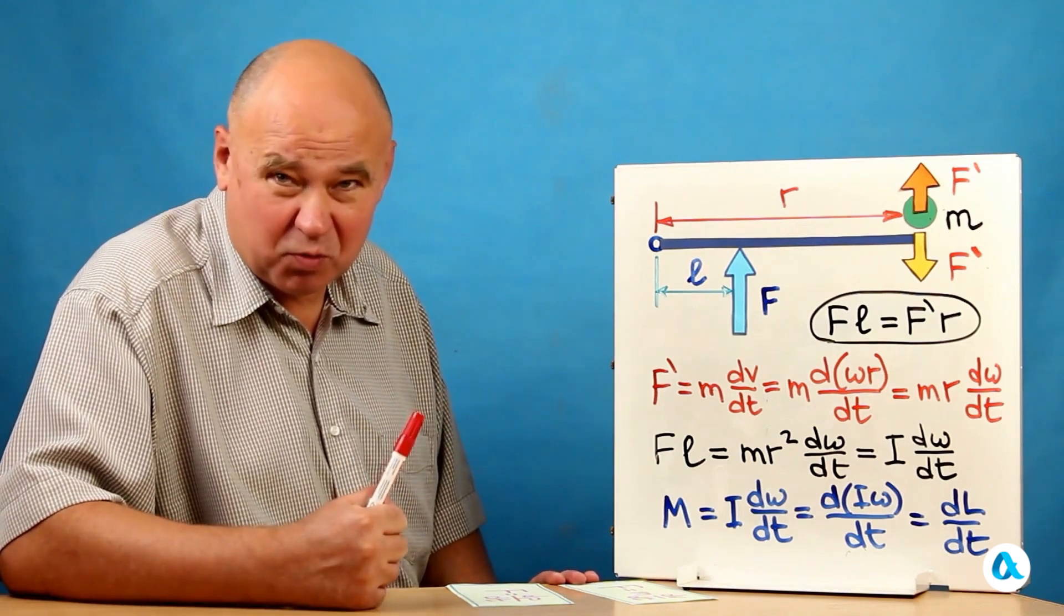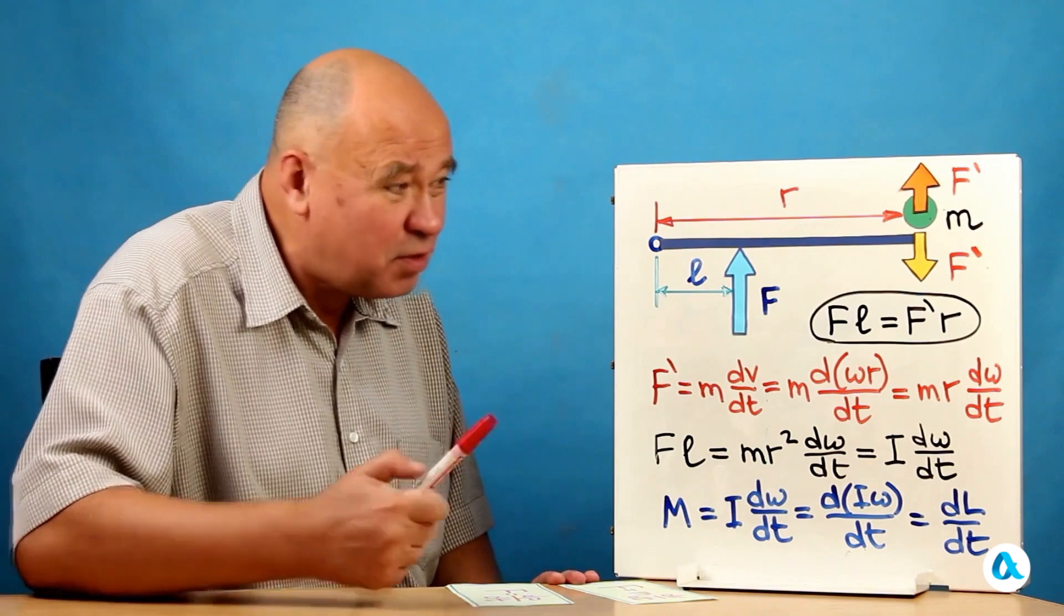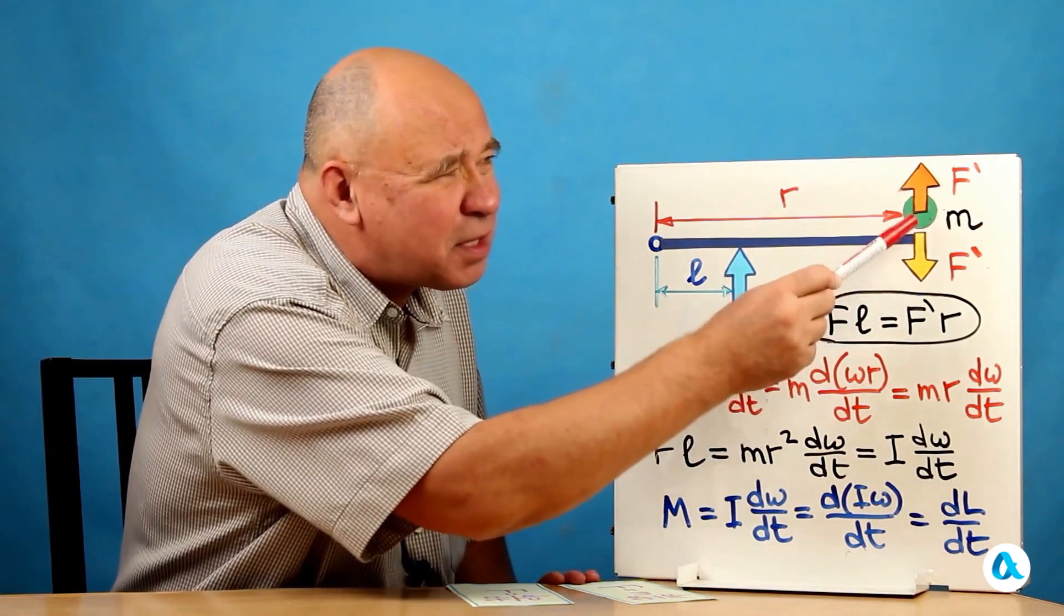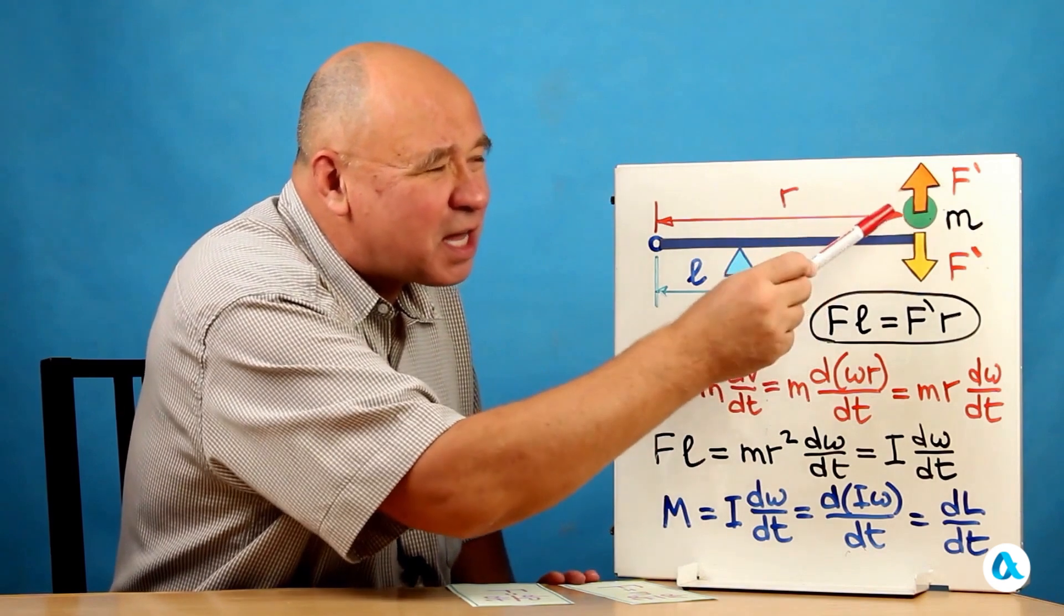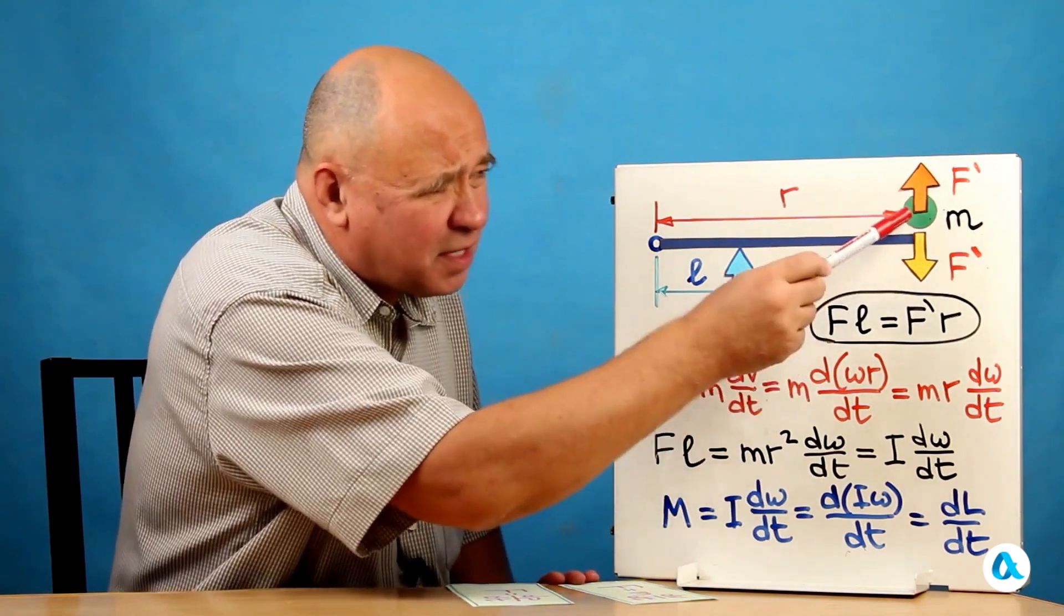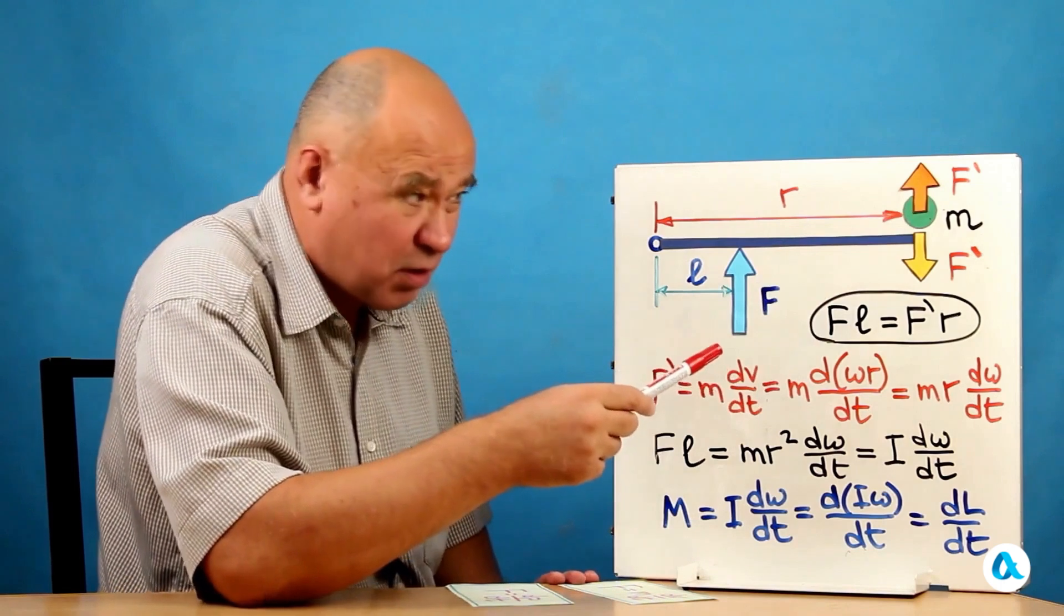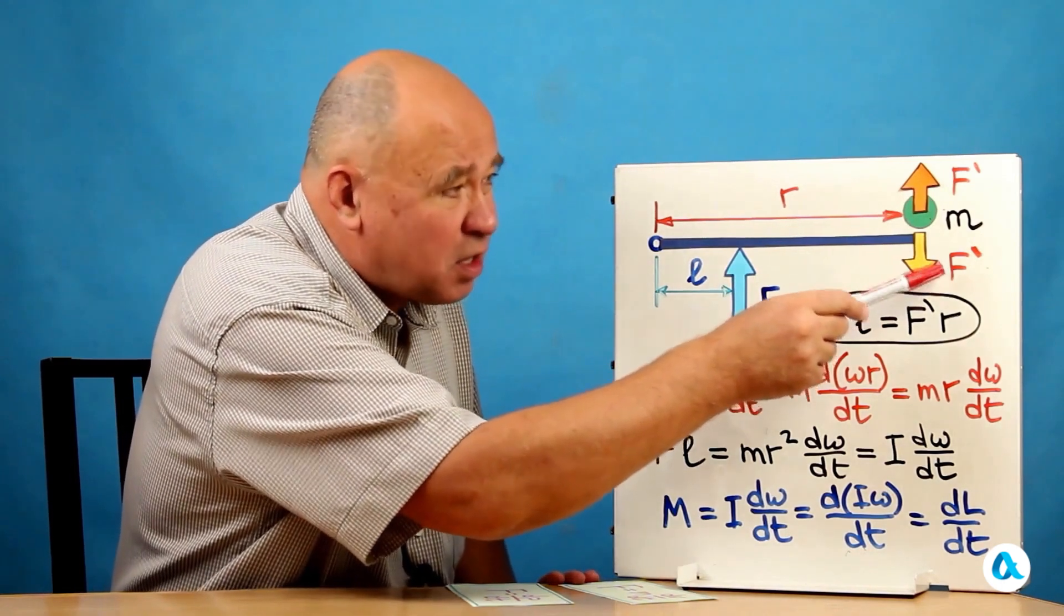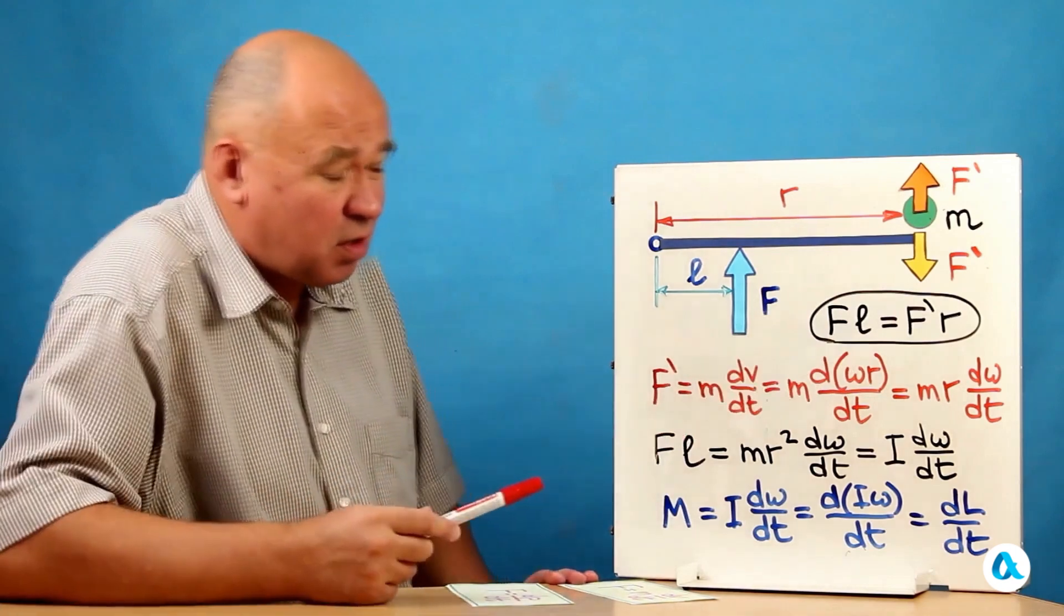The sum of the moments of the forces applied to the lever must be equal to zero. Therefore, FL equals here. I will denote the force with which the lever acts on the mass as Fe. And accordingly, the mass acts on the lever with the same force according to Newton's third law. Thus, a moment of force multiplied by R appears here. These two moments of force are equal.